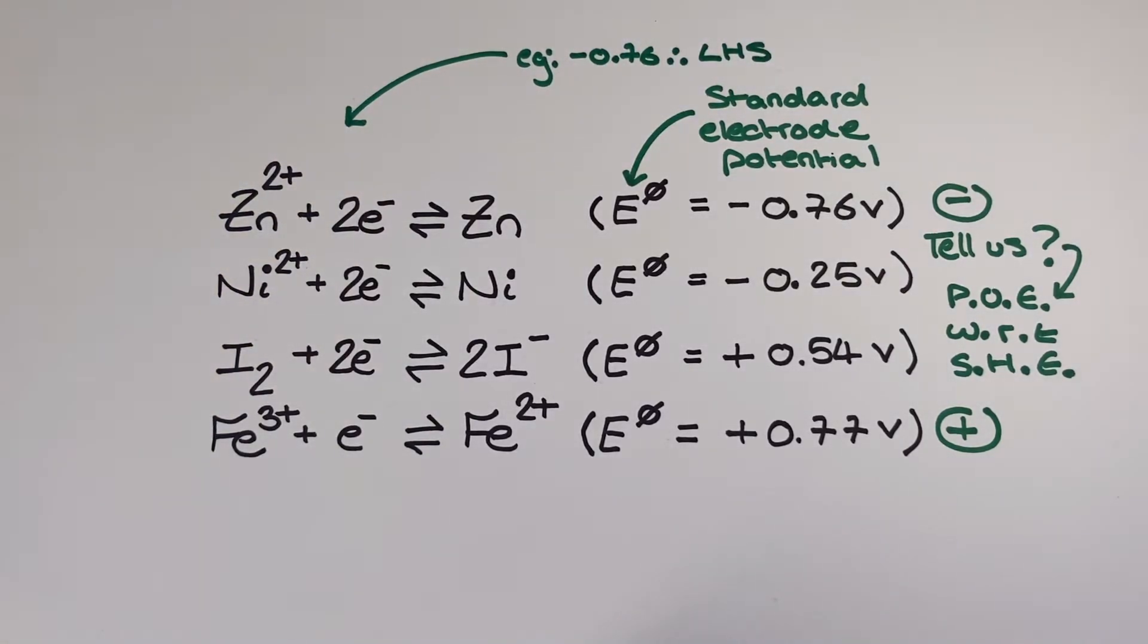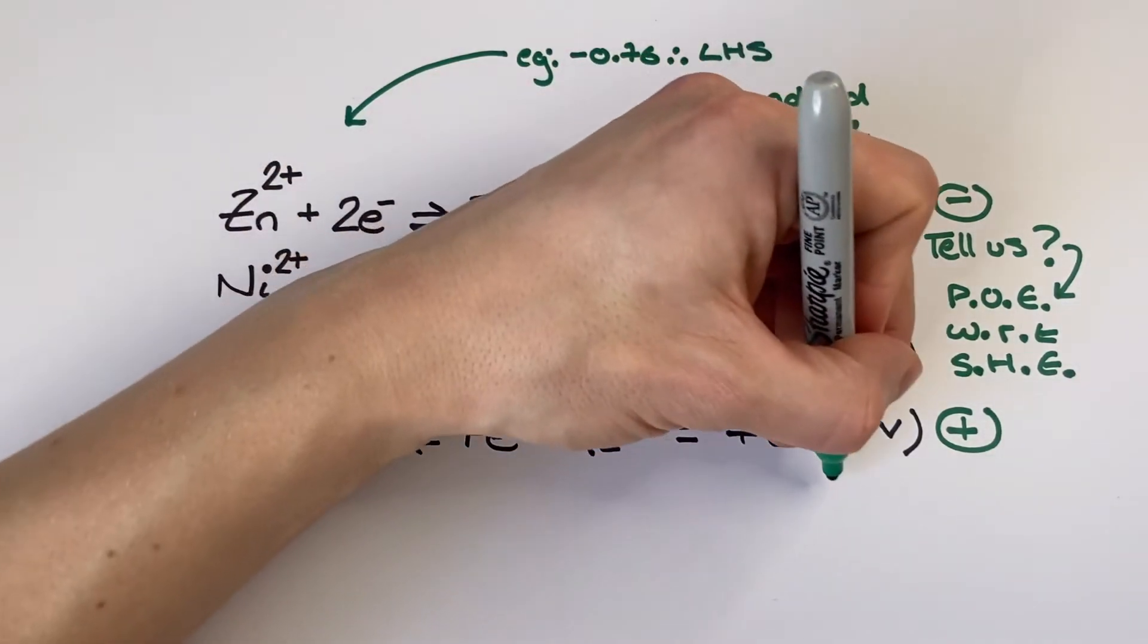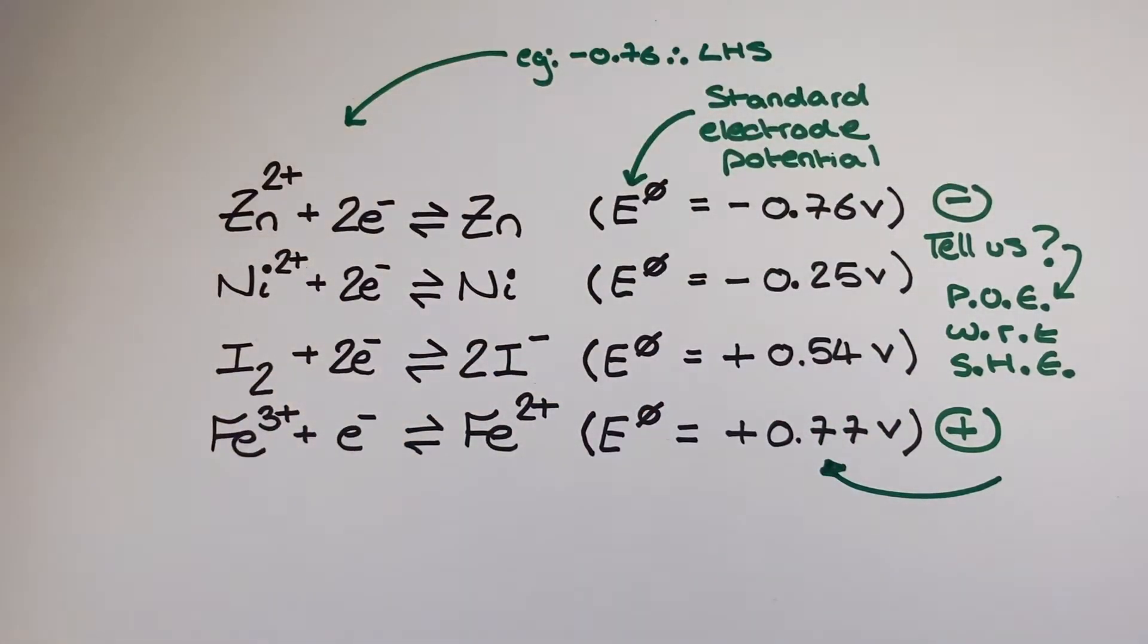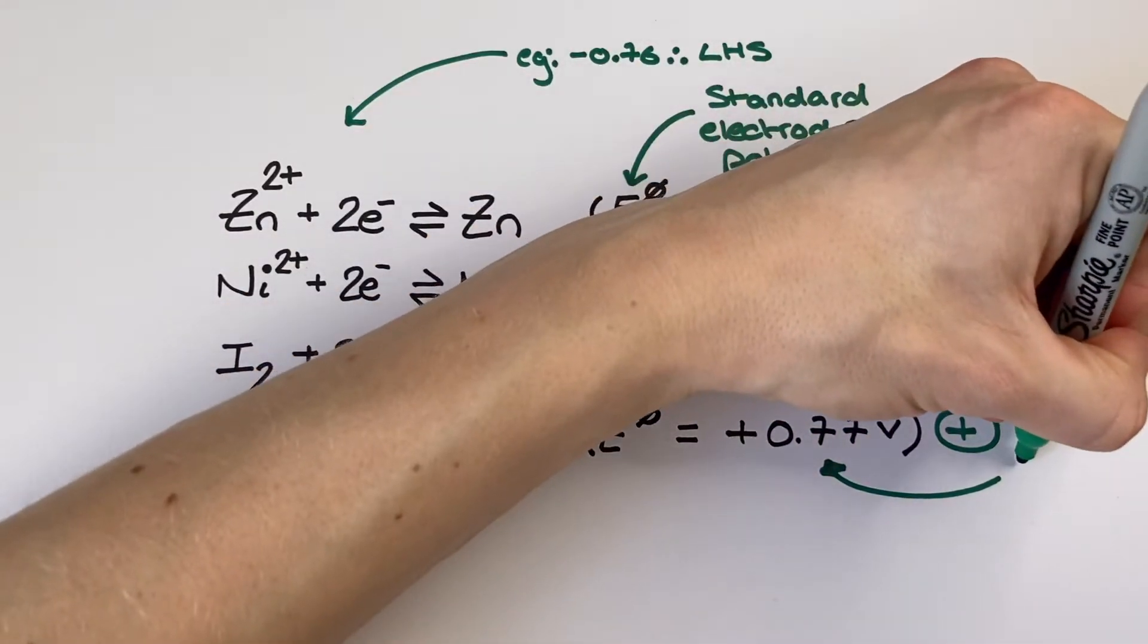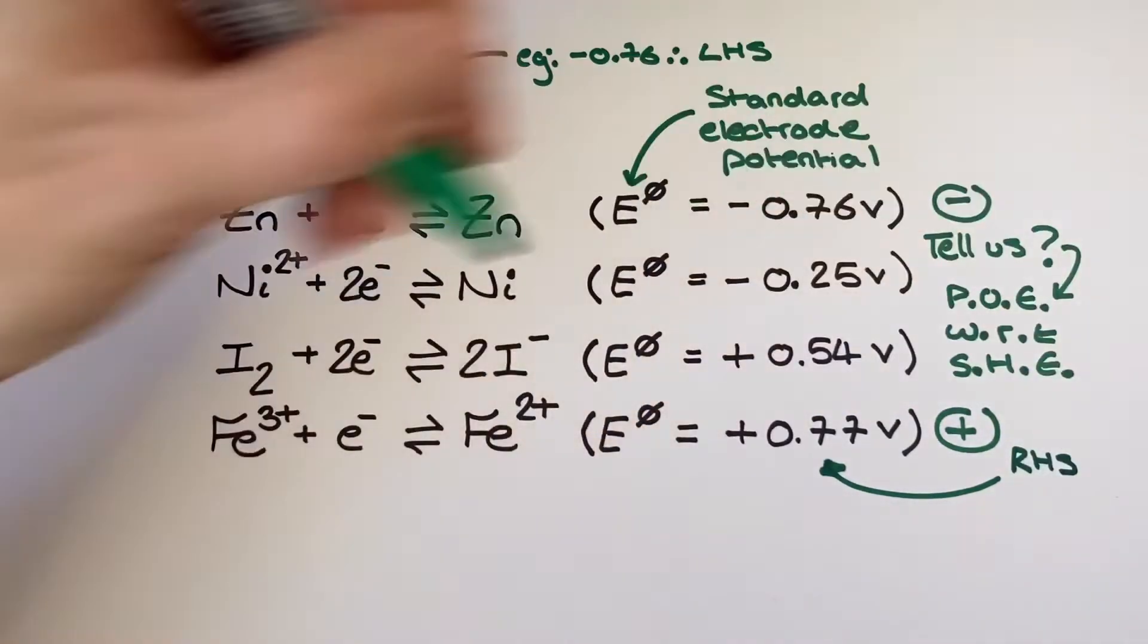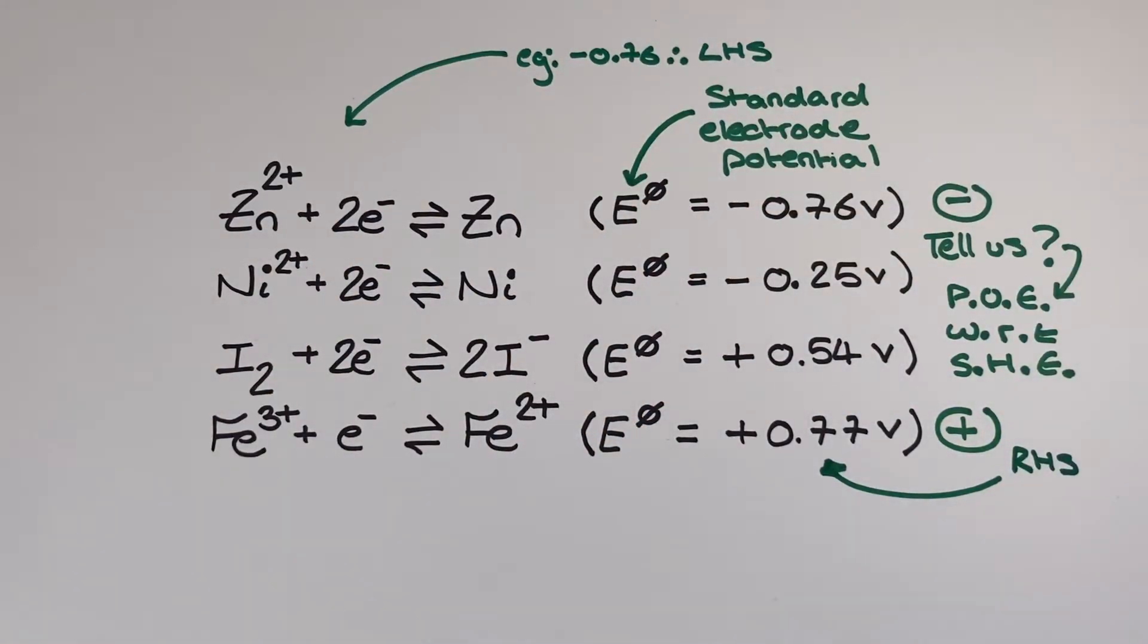What I can then add to this is that the more negative standard electrode potential half equations have got a greater tendency to lose electrons and undergo oxidation which would be a shift of their position of equilibrium to the left and the more positive standard electrode potential half equations have got a greater tendency to gain electrons and undergo reduction which would see their position of equilibrium shift to the right hand side.